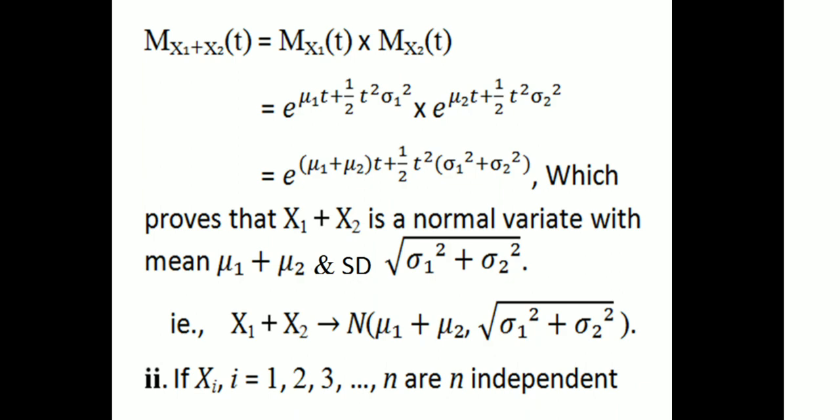By the moment generating function property for independent variables: if random variables X and Y are independent, then Mx+y(t) = Mx(t) × My(t). So we get e raised to μ1·t plus half t squared σ1 squared, times e raised to μ2·t plus half t squared σ2 squared. Since e^m × e^n = e^(m+n), we combine the exponents.